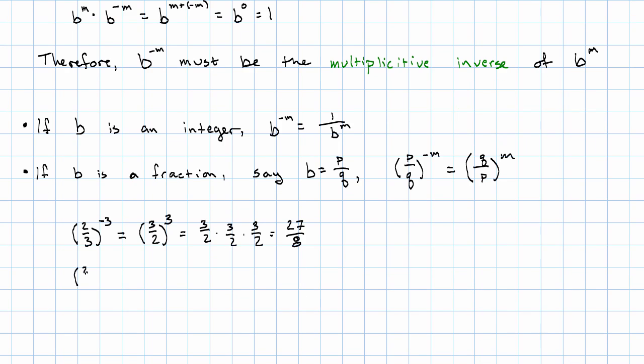What do I mean by that works? Well, two thirds to the positive three is two thirds times two thirds times two thirds, is 8 27ths, and 8 27ths times 27 eighths, yeah, that equals one. Which is, of course, two thirds to the zero. So that works still.